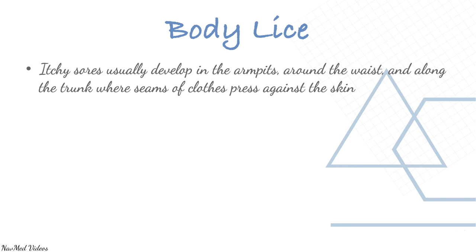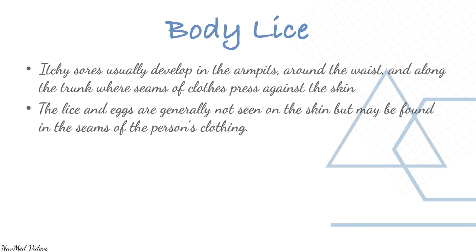Body lice: itchy sores usually develop in the armpits, around the waist, and along the trunk where seams of clothing press against the skin. The lice and eggs are generally not seen on the skin but may be found in the seams of the person's clothing.